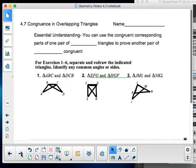So, essential understanding: you can use the congruent corresponding parts of one pair of congruent triangles to prove another pair of congruent triangles. Let's read that again. You can use the congruent corresponding parts of one pair of congruent triangles to prove another pair of triangles congruent.